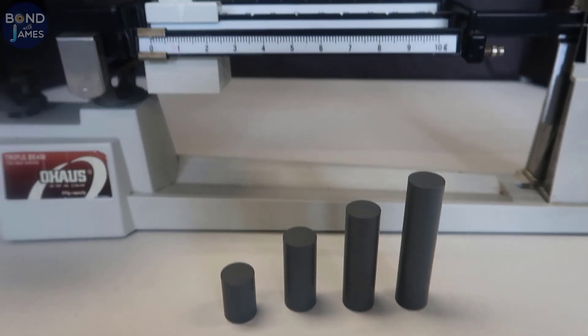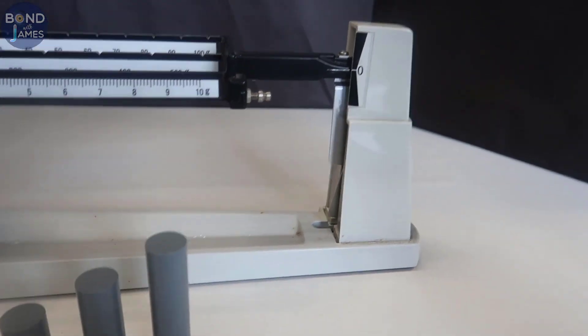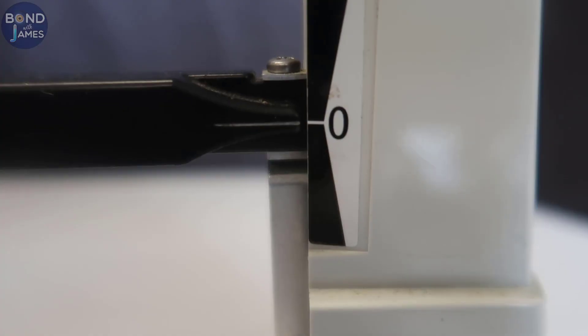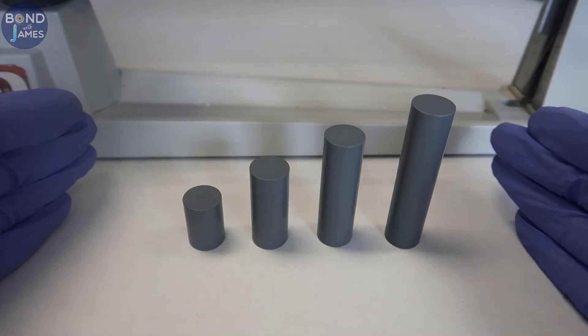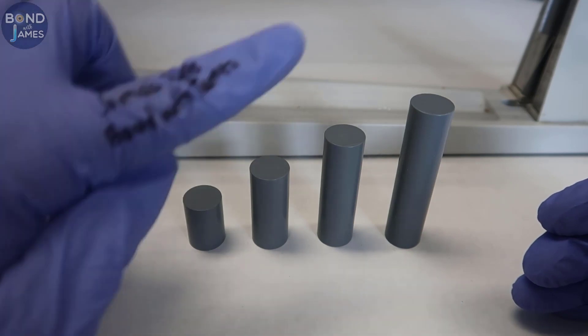I'm going to measure the mass with the triple beam balance. I went ahead and already zeroed out the balance. Let me show you. When obtaining my measurements, either mass or volume, I'm going to go in order from small to larger.